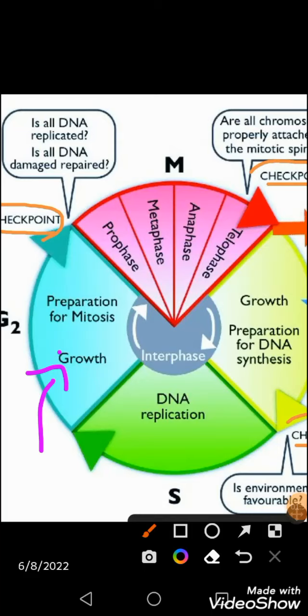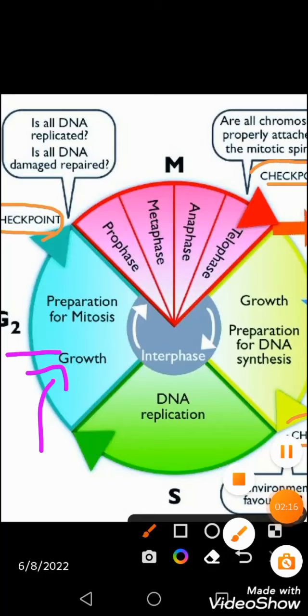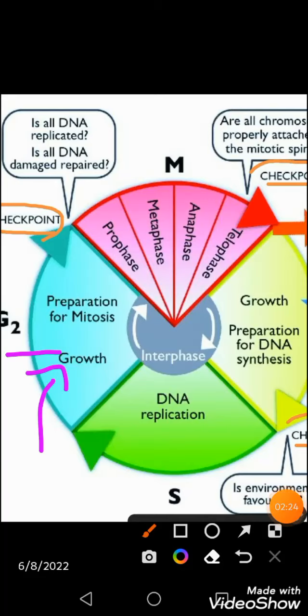The third phase of interphase is Gap 2, or G2 phase. This gap time is required for the production and accumulation of energy and the assembly of microtubules. Cell growth also occurs here by increasing the cytoplasm, so in G2 we expect an increase in the amount of cytoplasm.